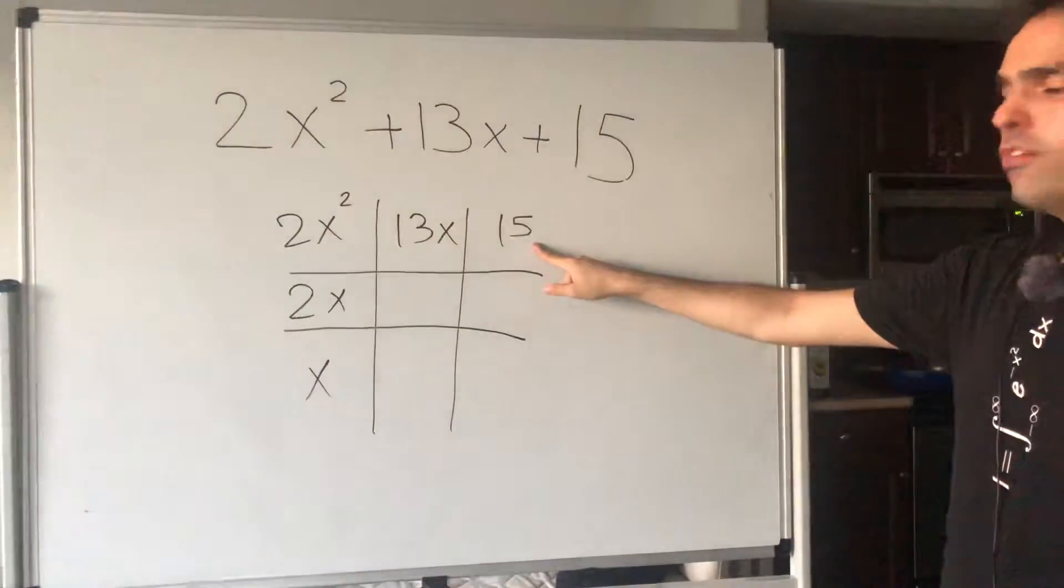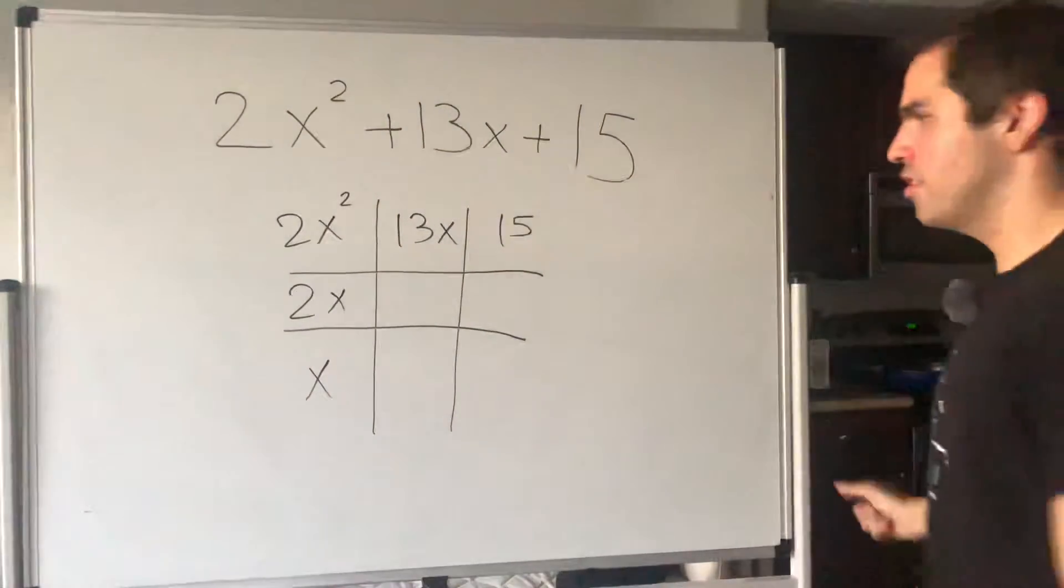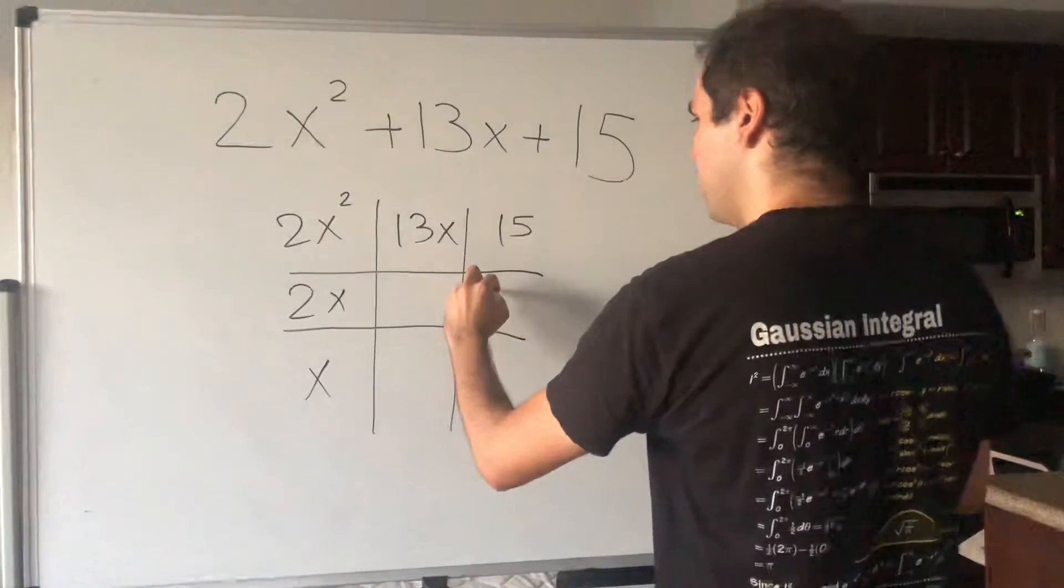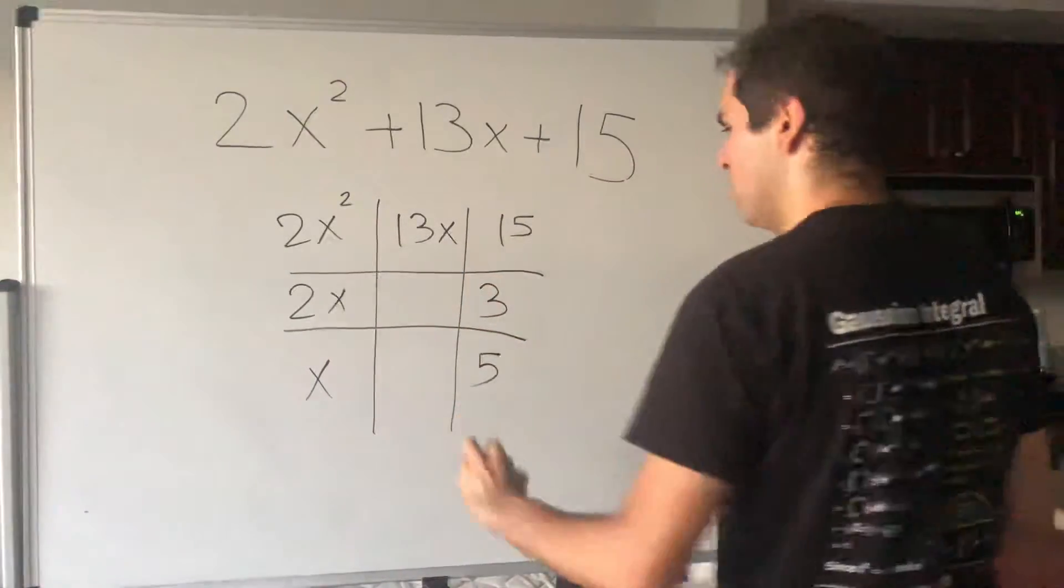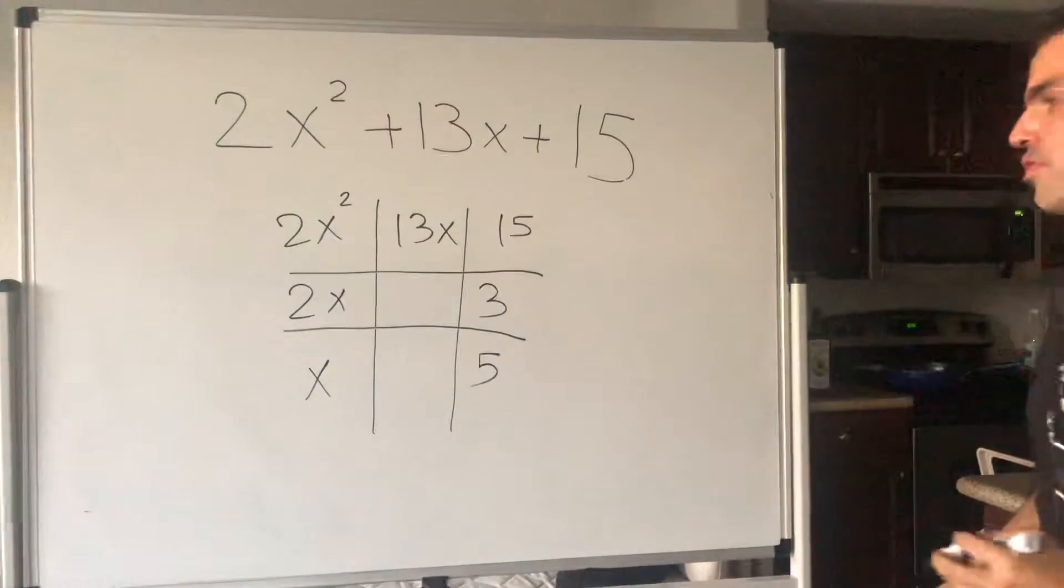And here, you want to write 15 as a product of two things. So for example, let's say 3 times 5. But again, it depends. Here you have to guess.